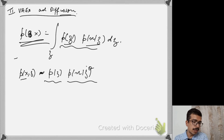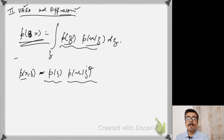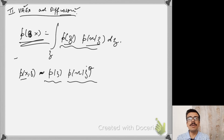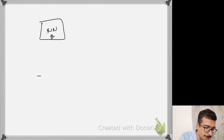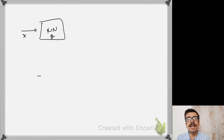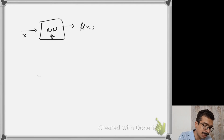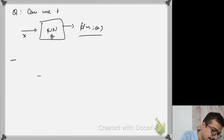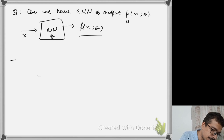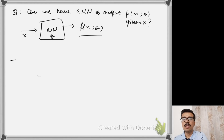Now let's look at what is missing. One natural approach to estimate the density could be to have a neural network parameterized by θ, defined so that it takes input x and outputs the probability p_X(θ) given x. The question is: is this possible? Can we have a neural network that directly outputs p_X(θ) given x?